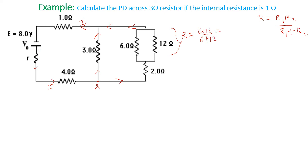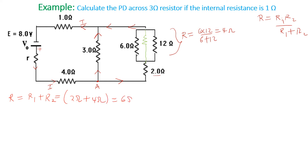Using a calculator, you get 4 ohm. So the 6 and 12 combined in parallel give a resistance of 4 ohm. That 4-ohm resistor is then in series with the 2-ohm resistor. For a series connection, R effective equals R1 plus R2, so 2 ohm plus 4 ohm gives 6 ohm.